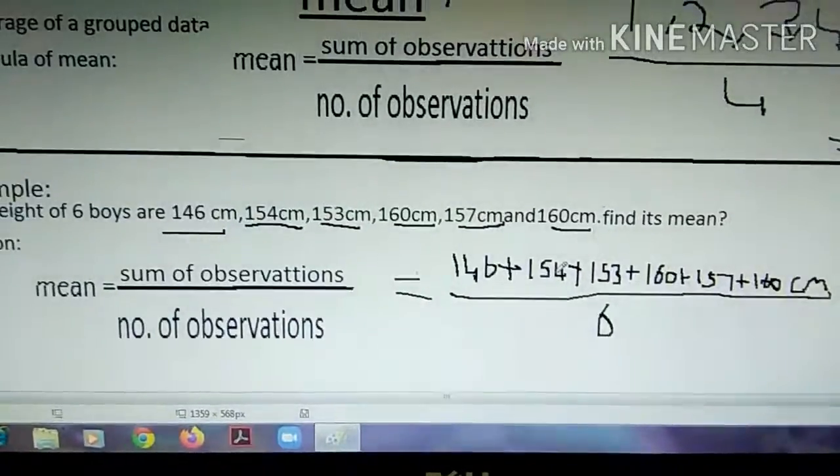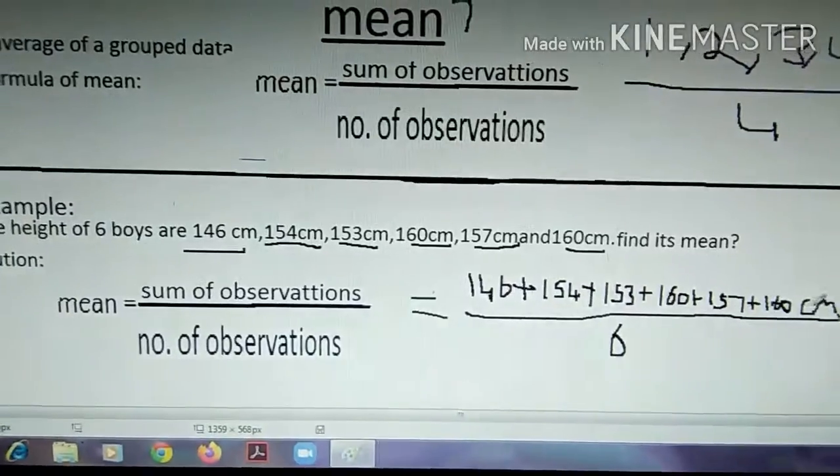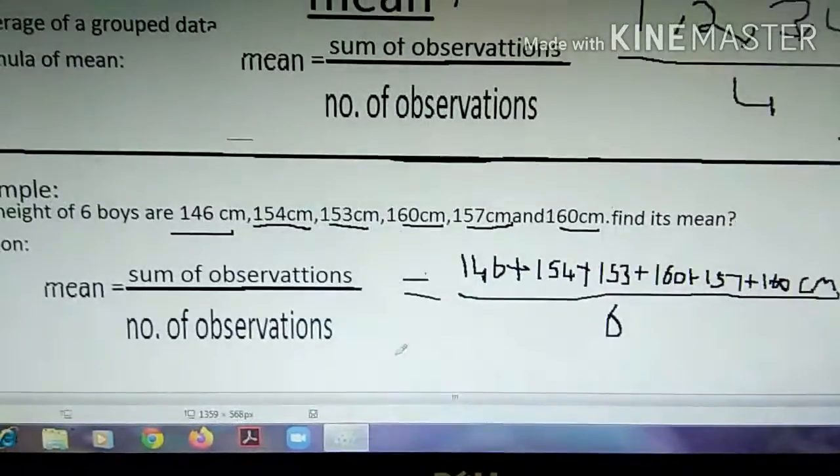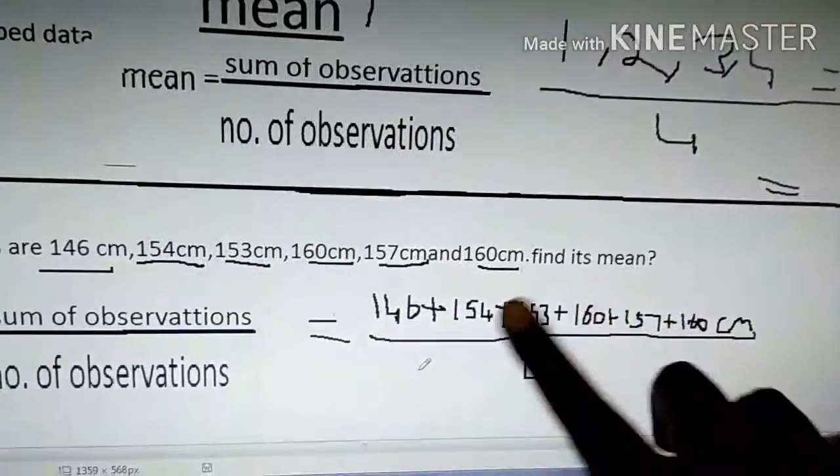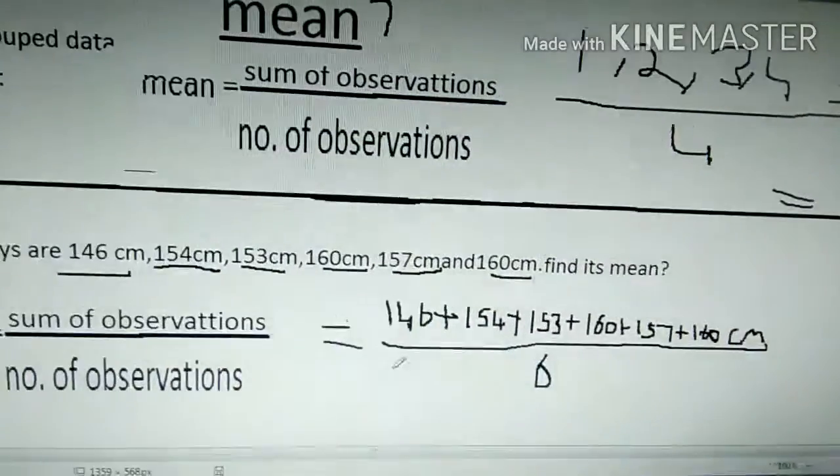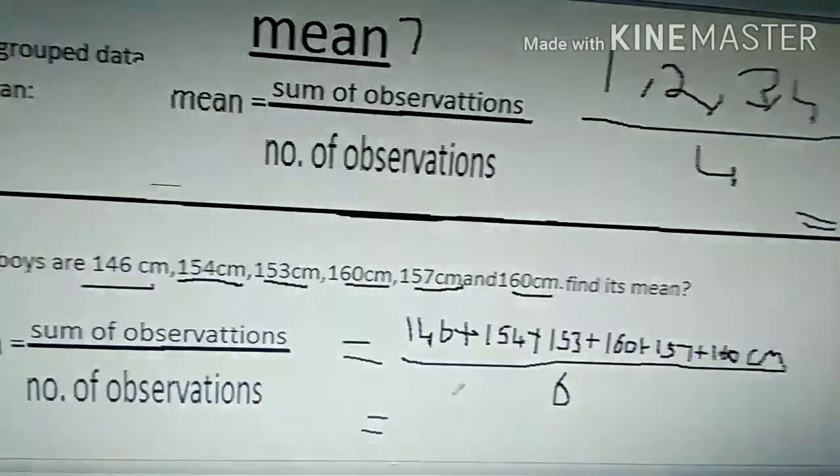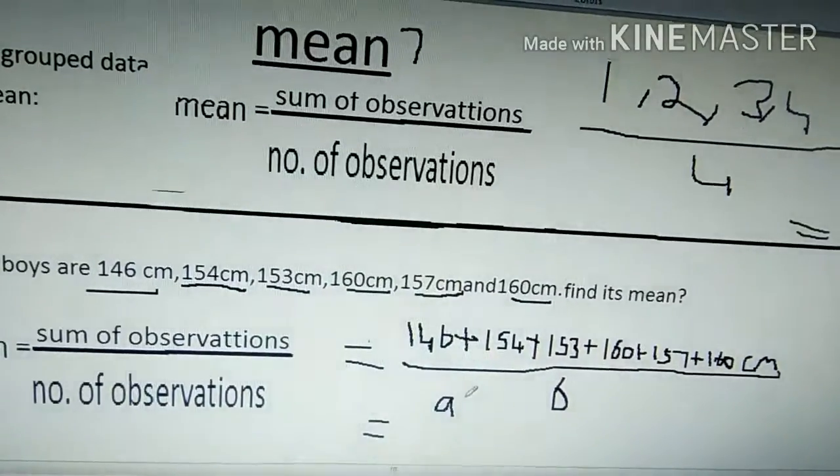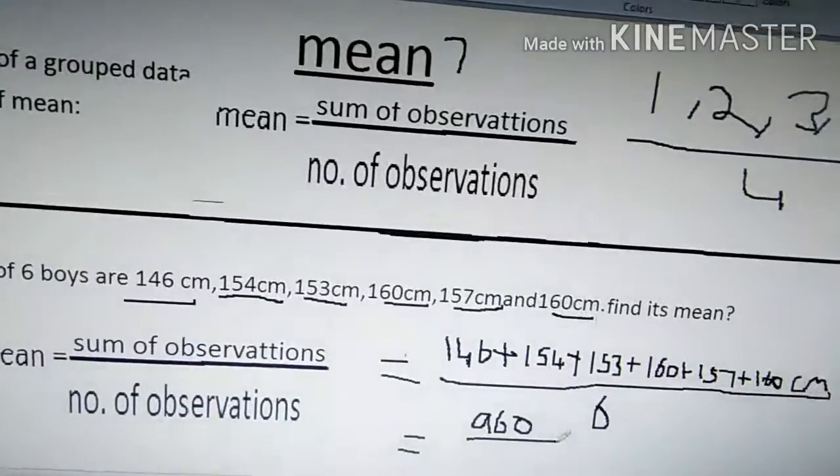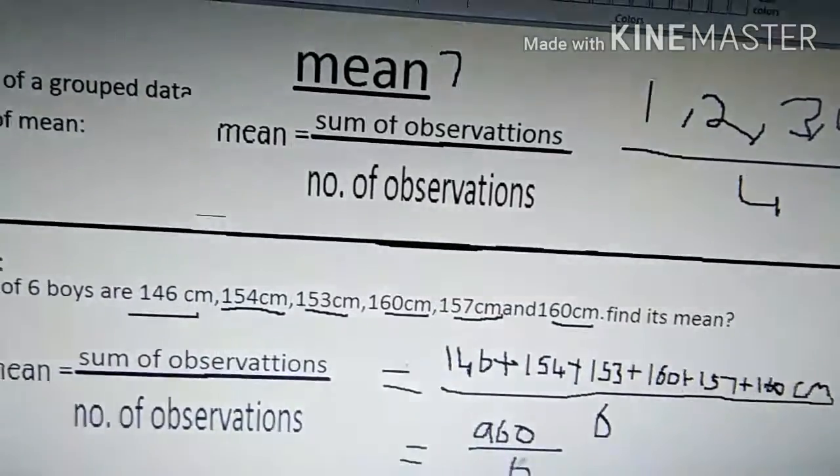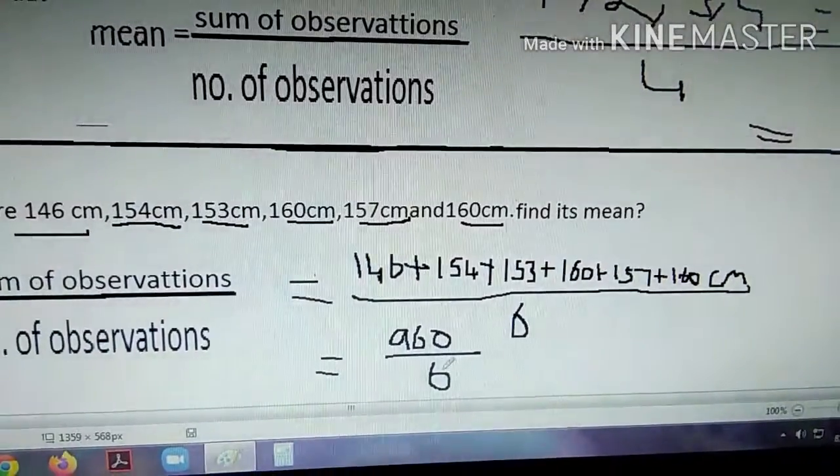Now, we need to calculate the sum of observations. Then, we write it here. After calculating all these, we will get 960 by 6. Now, we need to cancel it.